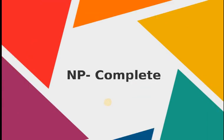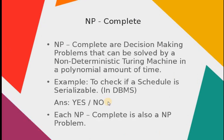Now, what is NP-complete? NP-complete are NP problems which are decision-making problems and can be solved by a non-deterministic Turing machine in a polynomial amount of time. An example of an NP-complete problem is to check if a schedule is serializable in DBMS. These are mostly yes or no questions, so each NP-complete problem is also an NP problem.